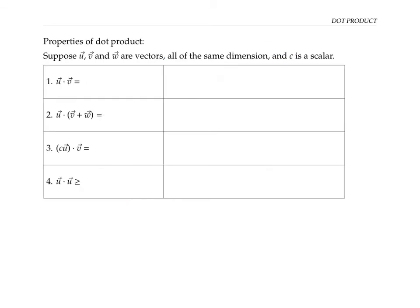Here are some properties of dot product. Let's suppose that u, v, and w are vectors, all of the same dimension. By the same dimension, I just mean the same number of elements. And let's suppose that C is a scalar. If we take the dot product u dot v, that's the same thing as doing v dot u. In other words, dot product is commutative.